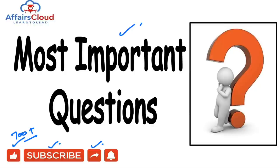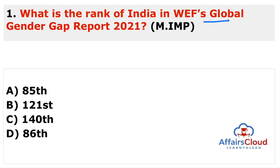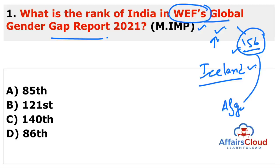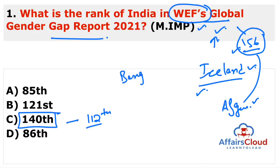The first question: what is the rank of India in the World Economic Forum Global Gender Gap Report 2021? This report is published by the World Economic Forum. Iceland topped this index. 156 countries are evaluated, and Afghanistan is on the 156th spot. India's position is 140th, which is a significant drop because in 2020 India's rank was 112th — meaning India has slipped 28 places to 140th in 2021.